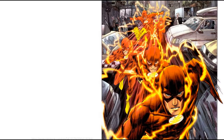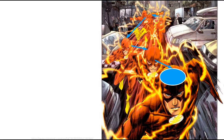I show this DC Comics character Flash running super fast towards us because I see an analogy. The sequence of images represent different versions of the same person but at different points in time. Each version is visually a little bigger as it gets closer to our viewpoint. The body closest to us is the most recent version. In Git, that most recent version is called HEAD.